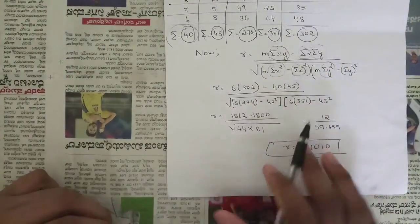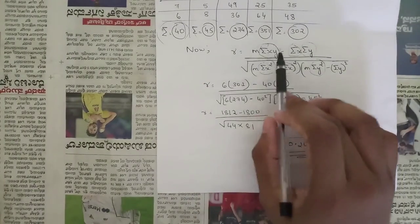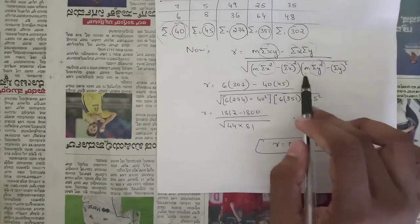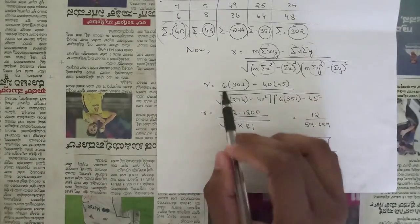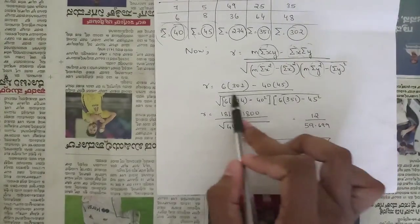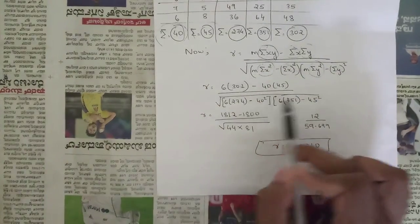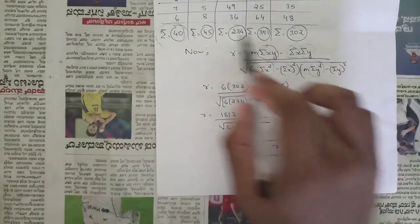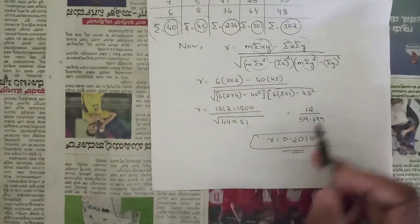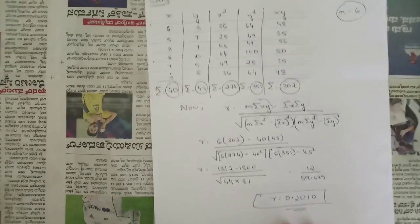The correlation coefficient r is given by: r = [n·Σxy − Σx·Σy] / √[(n·Σx² − (Σx)²)(n·Σy² − (Σy)²)]. Substituting n = 6, Σxy = 302, Σx = 40, Σy = 45, Σx² = 274, Σy² = 351: r = [6·302 − 40·45] / √[(6·274 − 40²)(6·351 − 45²)]. After simplification, the correlation coefficient r = 0.2010.